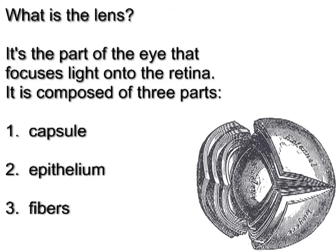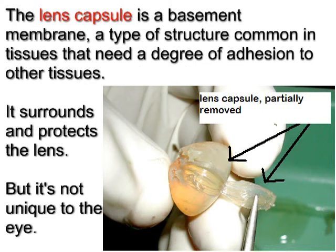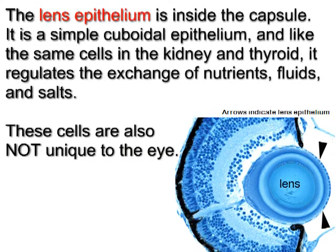The lens capsule is a basement membrane, a type of structure common in tissues that need a degree of adhesion to other tissues. It surrounds and protects the lens, but it's not unique to the eye. The lens epithelium is inside the capsule.